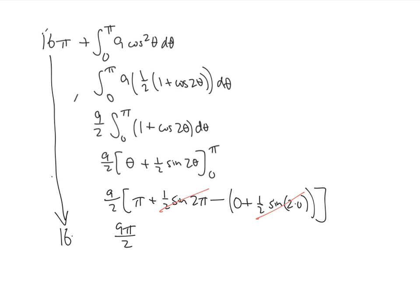And then the 16π we had from before, 16π is 32π over 2 plus 9π over 2. That's going to give us 41π over 2. And that's our final answer.